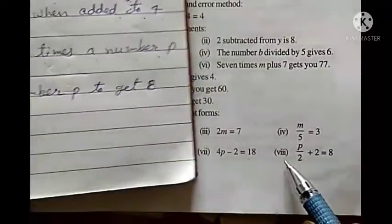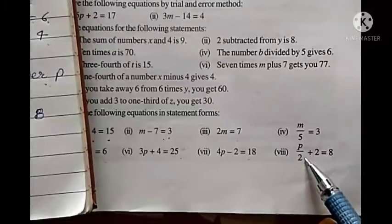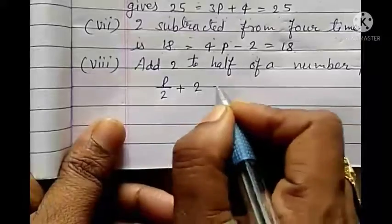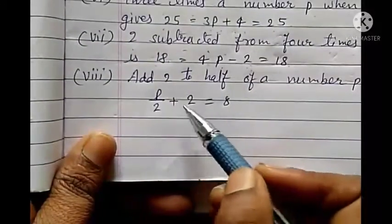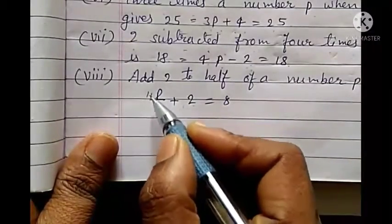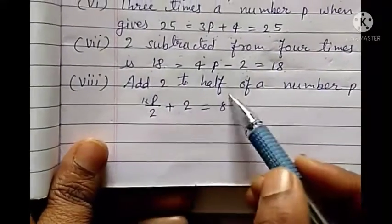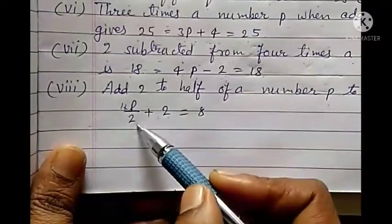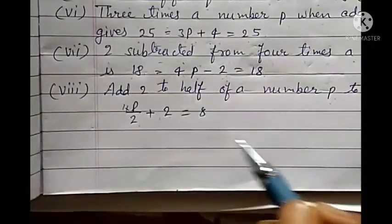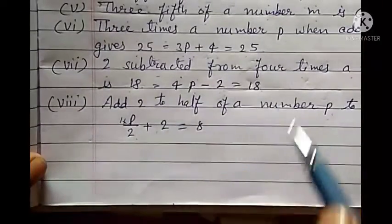Eighth: p upon 2 plus 2 equals to 8. We add 2 to half of a number p. One upon 2 is called half, and p multiplied by half is p upon 2. So the statement is: add 2 to half of a number p gives 8. This is how equations become statements.